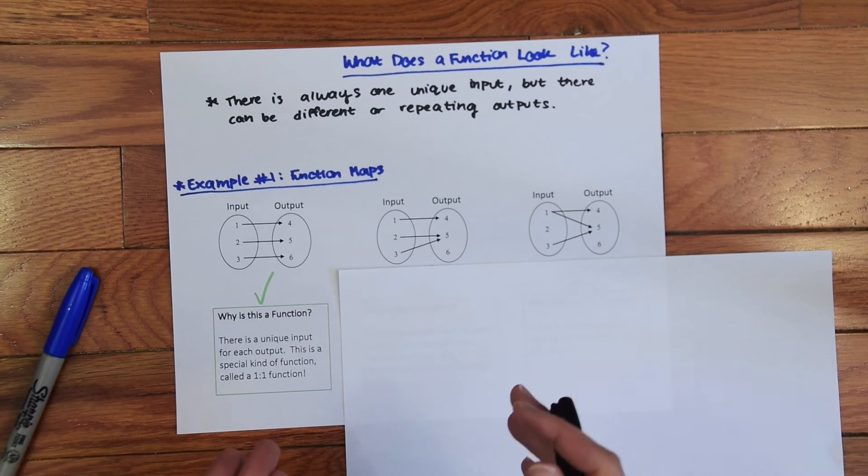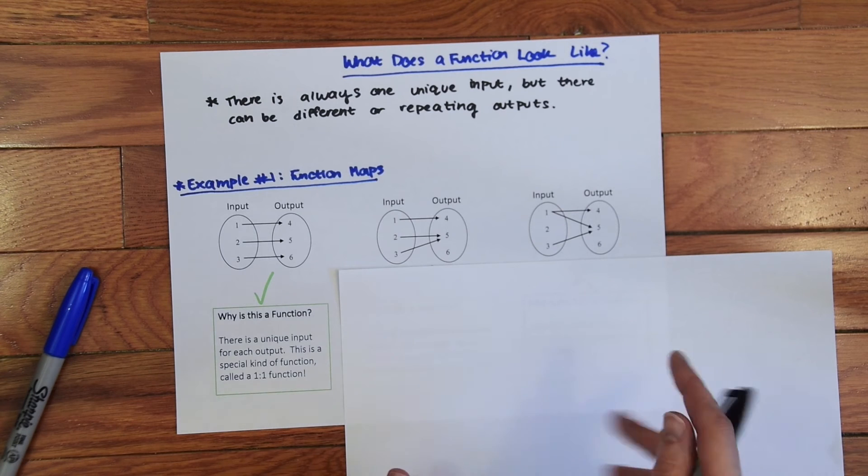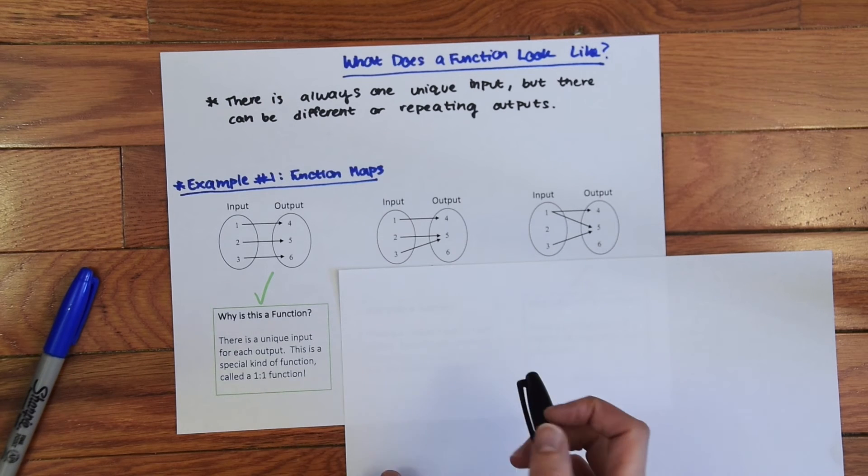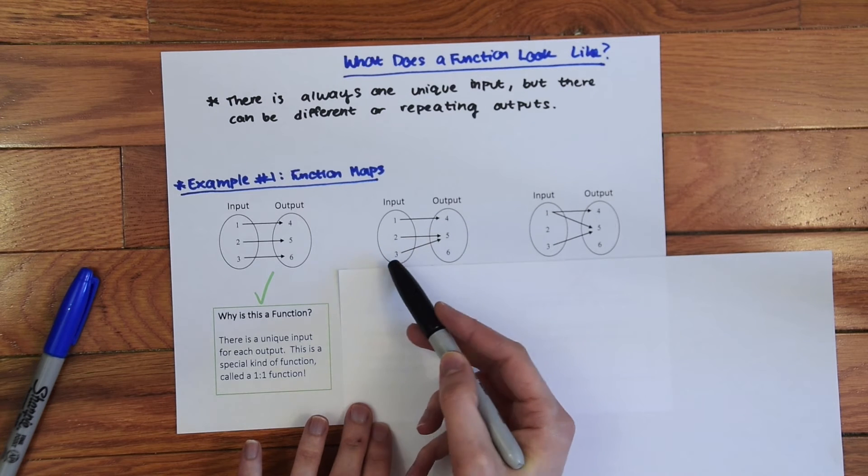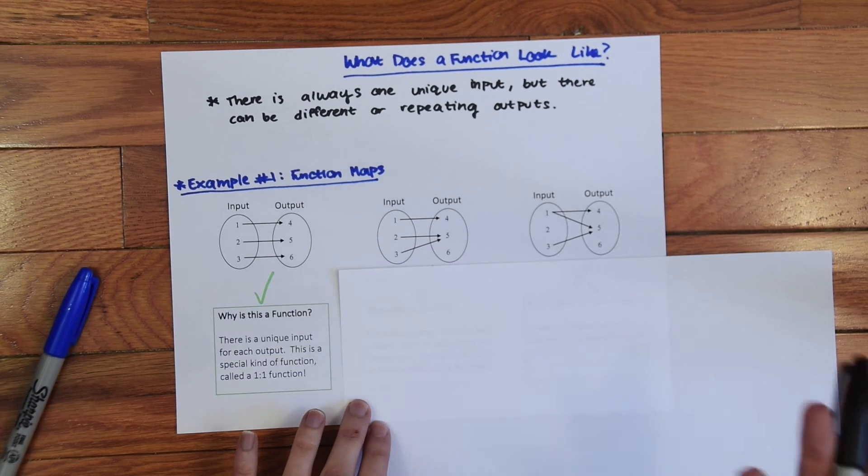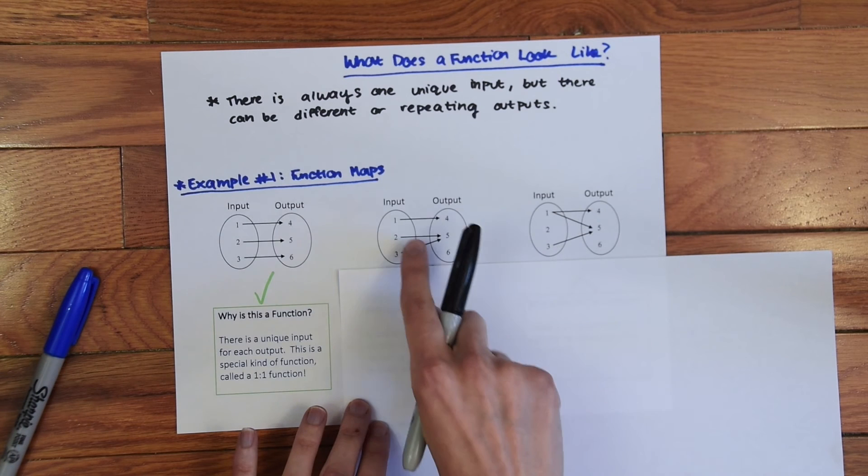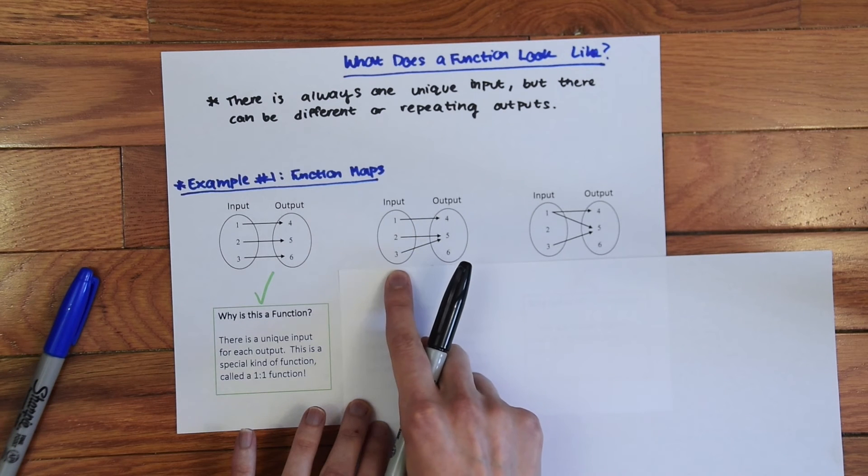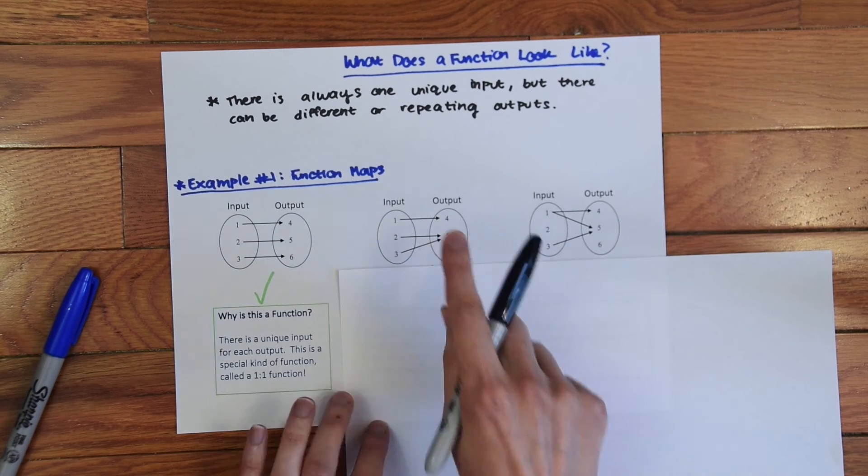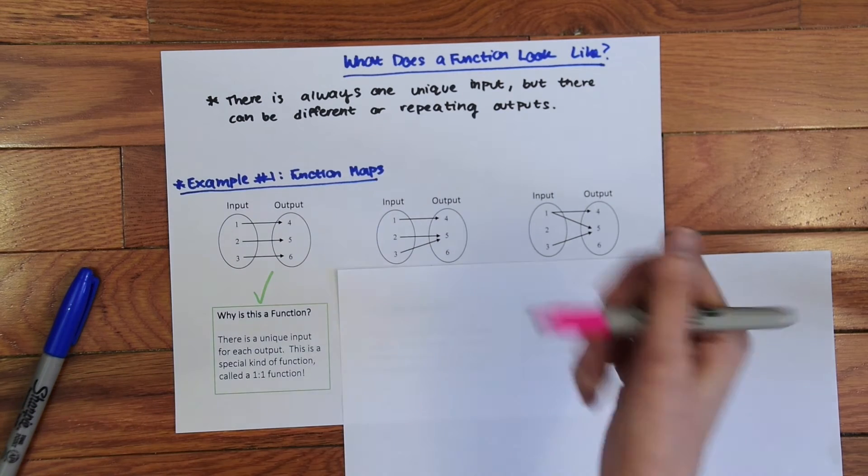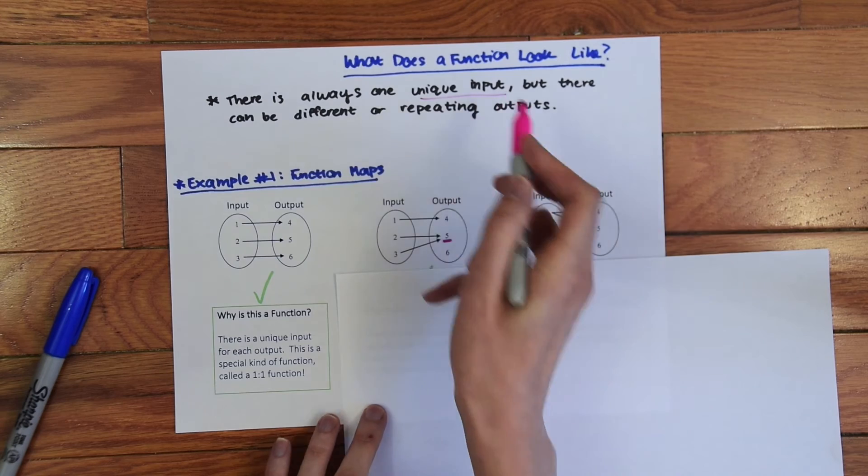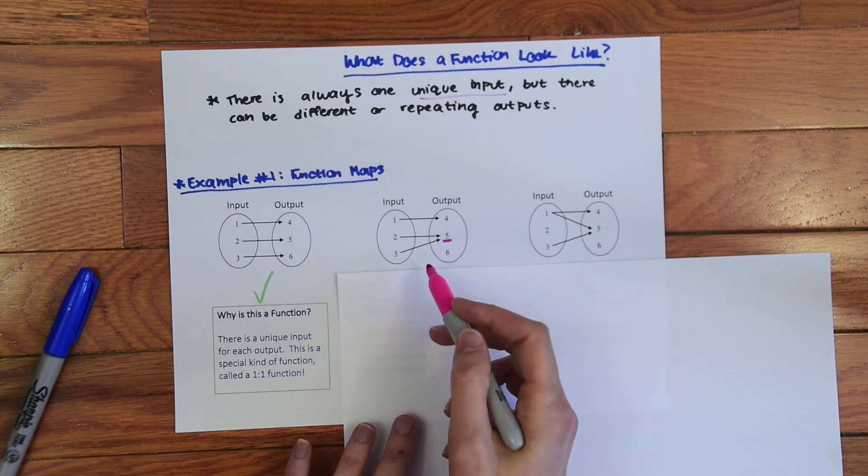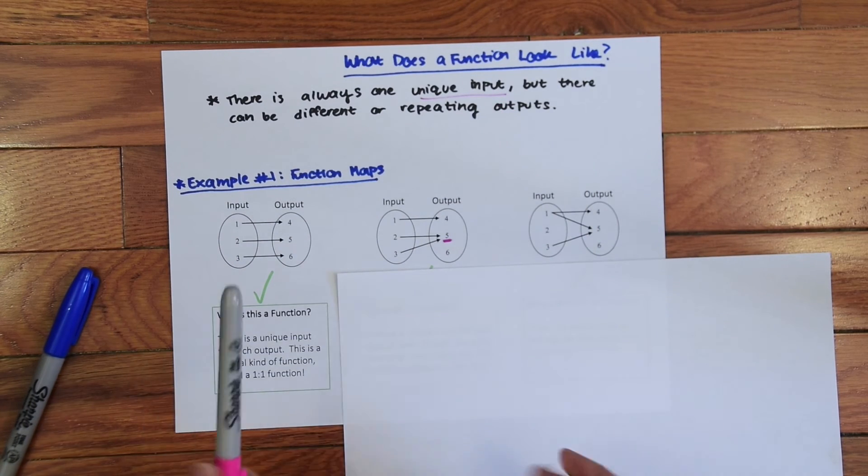So let's look at this next example and see if we can figure out if this is a function. So we have one paired with four, two paired with five, and then three is also paired with five. So is this a function? There's still unique inputs but then there's a repeating of five. So is this a function? There's always a unique input, so the only thing, only the inputs have to be unique. So yes this is also a function.